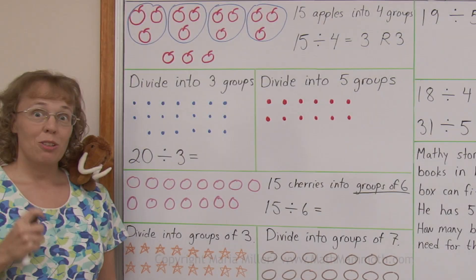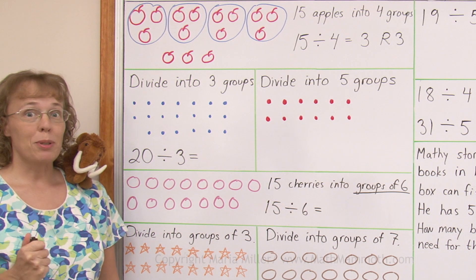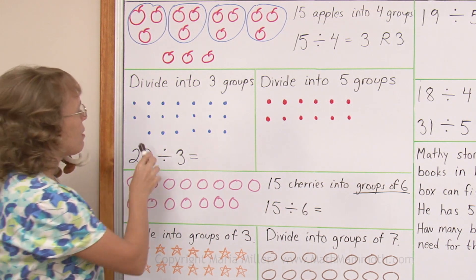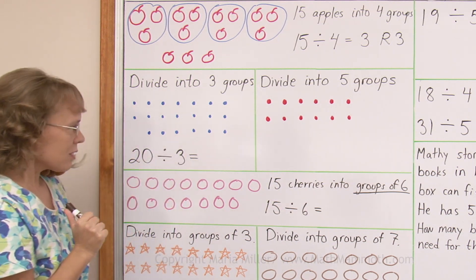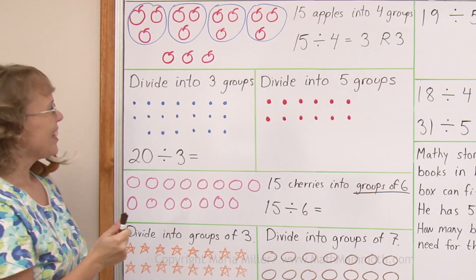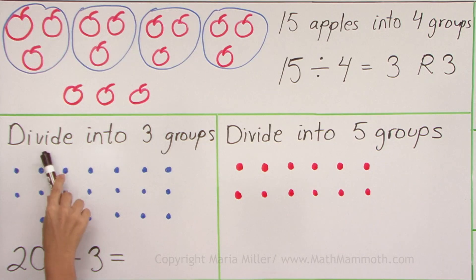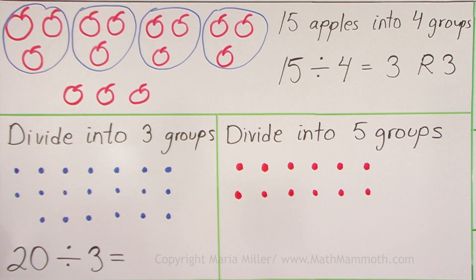Let's look at another example. We have here lots of blue dots — Mathi says they're blueberries. Yes. Divide them into three groups as equally as you can.